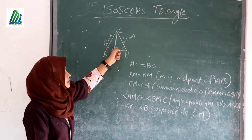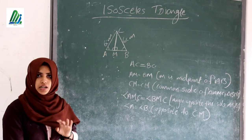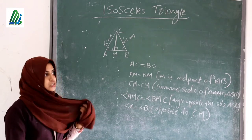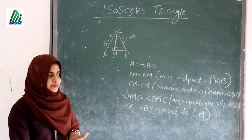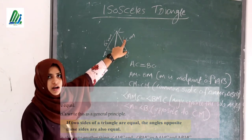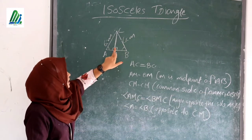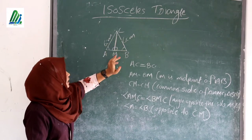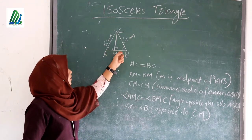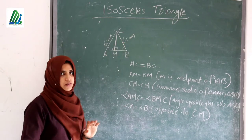Angle AMC and angle BMC are opposite to sides AC and BC, and since AC equals BC, the angles opposite to the equal sides are also equal. From this we can reach a general principle: the angles opposite to the equal sides are equal.